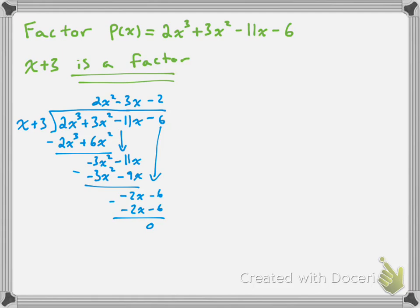Now that we've long divided, we can rewrite 2x³ + 3x² − 11x − 6 as (x + 3) times the quotient from long division, which is 2x² − 3x − 2. We've partially factored this, but we haven't fully factored it yet because we might be able to factor the remaining quadratic 2x² − 3x − 2.